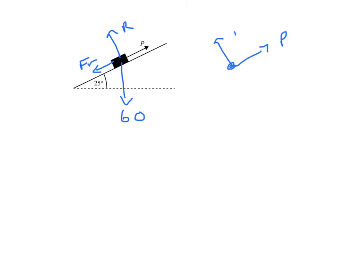I'm going to have 60 cos 25 acting into the plane and my 60 sine 25 acting down the slope.